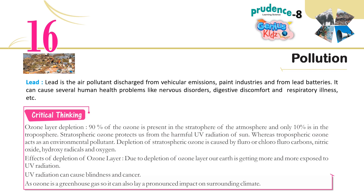Ozone layer depletion: 90% of the ozone is present in the stratosphere of the atmosphere, and only 10% is in the troposphere. Stratospheric ozone protects us from the harmful UV radiation of the sun, whereas tropospheric ozone acts as an environmental pollutant. Depletion of stratospheric ozone is caused by chlorofluorocarbons, nitric oxide, hydroxy radicals, and oxygen. Effects: Due to depletion of the ozone layer, our Earth is getting more exposed to UV radiation. UV radiation can cause blindness and cancer. As ozone is a greenhouse gas, it can also have a pronounced impact on the surrounding climate.